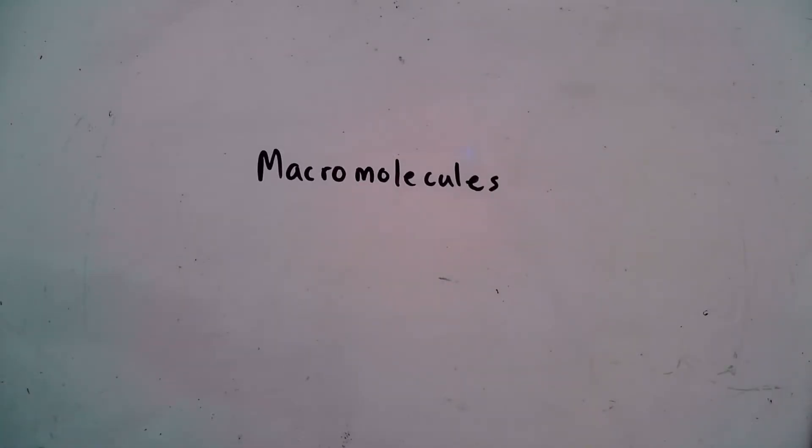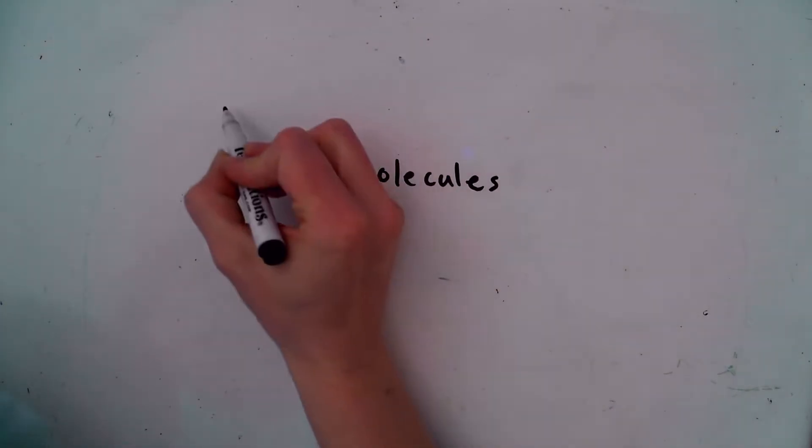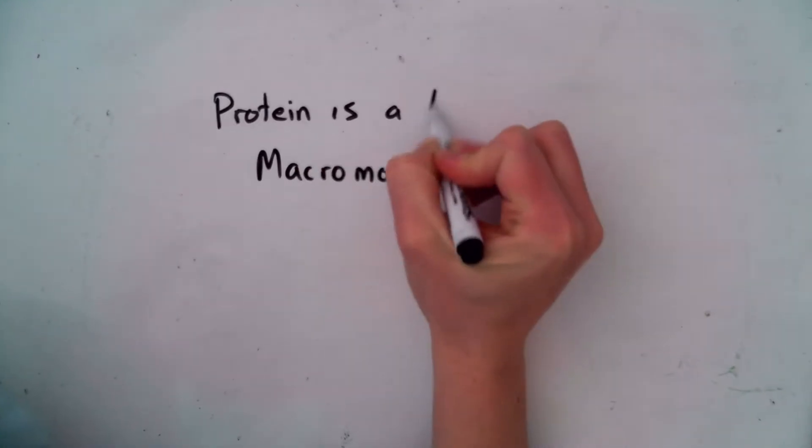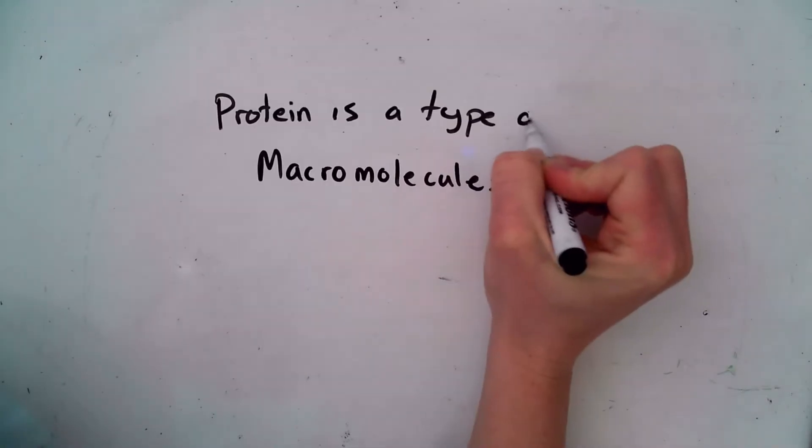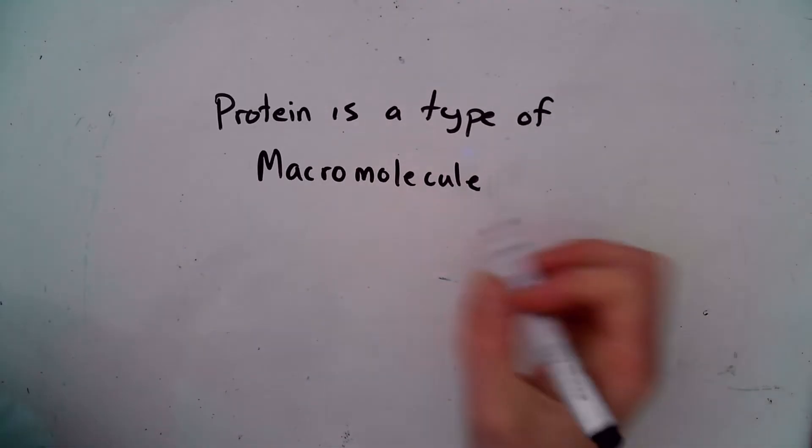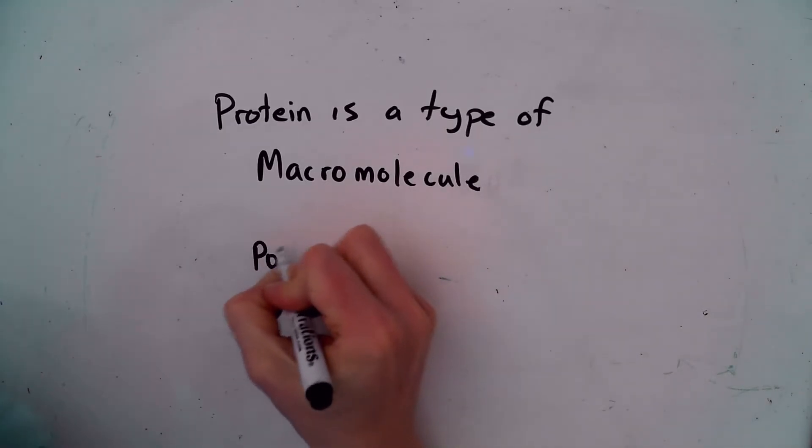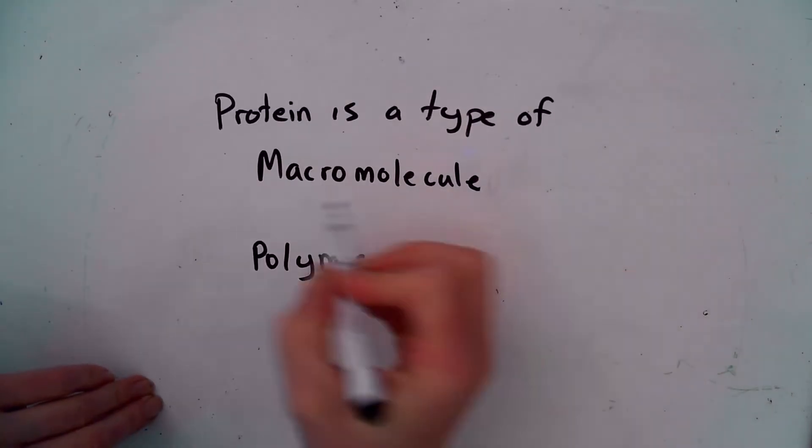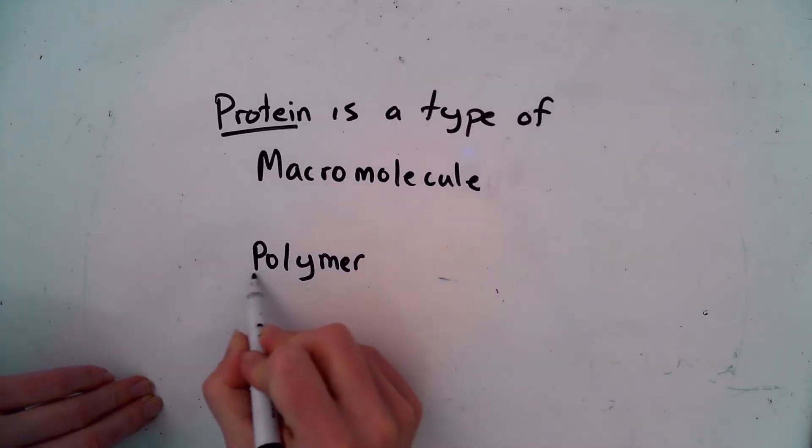Earlier this school year we talked about different macromolecules that make up the human body. One of those four major molecules was called a protein. A protein is a type of macromolecule and all macromolecules were called polymers because they had repeating units.